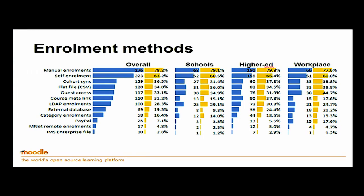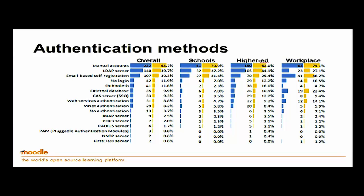Enrolment plug-ins are dominated by the simple ones. A lot of Moodle out there is small scale, so it's not necessarily relying on a big student information system or an LDAP system. Manual enrolments and self-enrolments are very important still. Authentication methods: manual is way up there, showing that those small sites are important, but LDAP and email-based self-registration also feature.